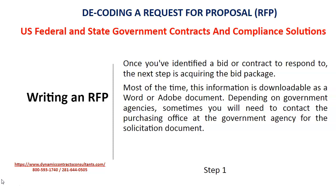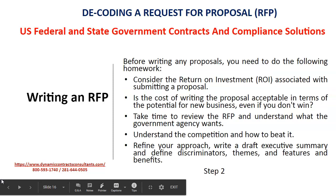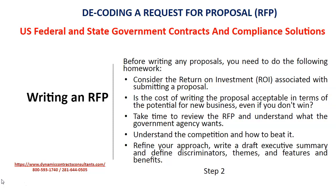Now let's take a look at how we should write an RFP. Once you've identified a bid or contract to respond to, the next step is acquiring the bid package. Most of the time, this information is downloadable as a Word or Adobe document. Depending on the government agency, sometimes you will need to contact the purchasing office for the solicitation document. Before writing any proposals, consider the return on investment associated with submitting a proposal — is the cost of writing the proposal acceptable in terms of the potential for new business, even if you don't win it? Take time to review the RFP and understand what the government agency wants.